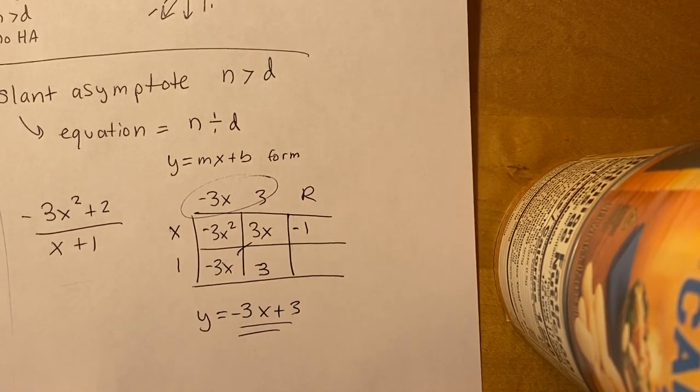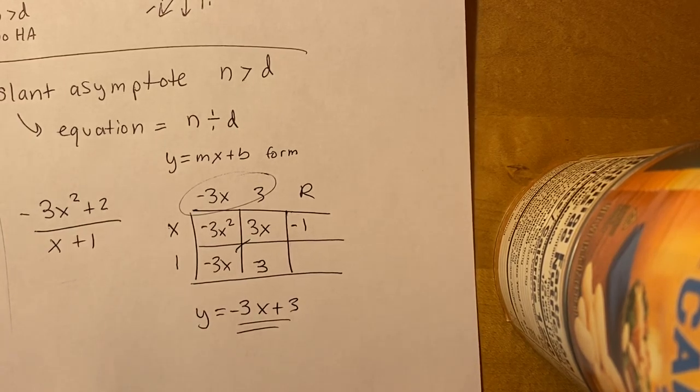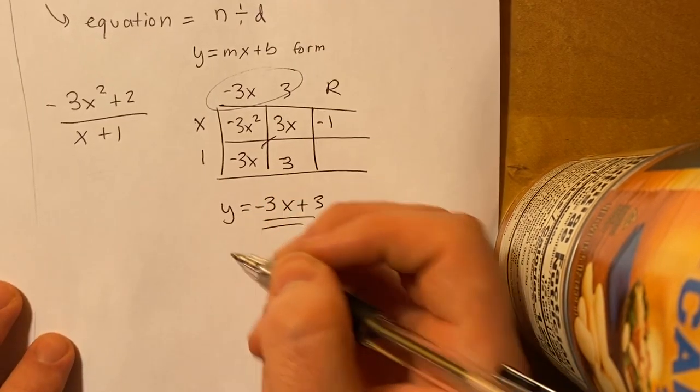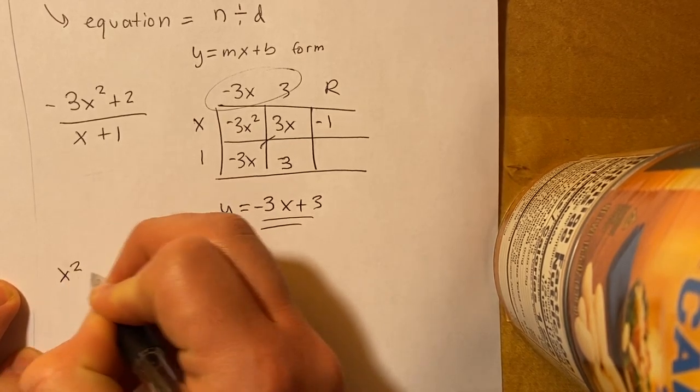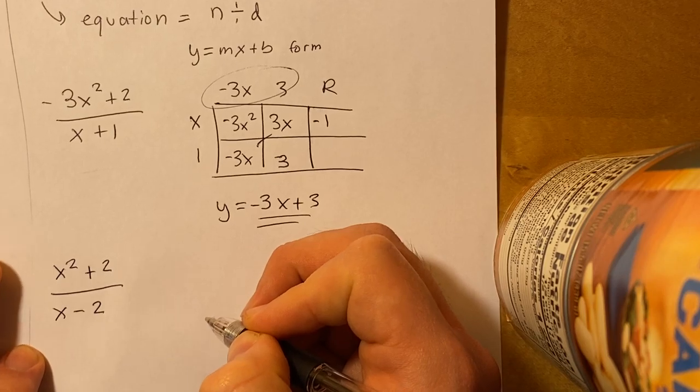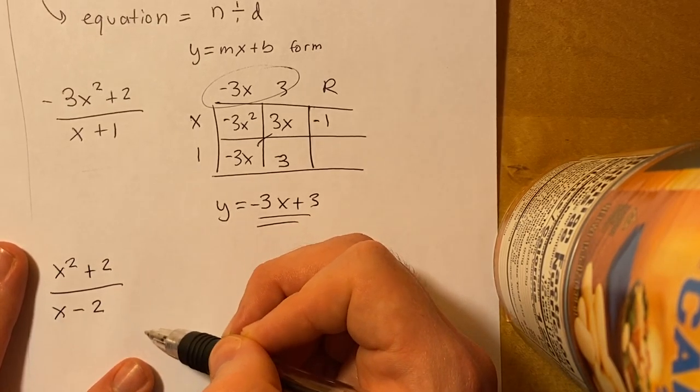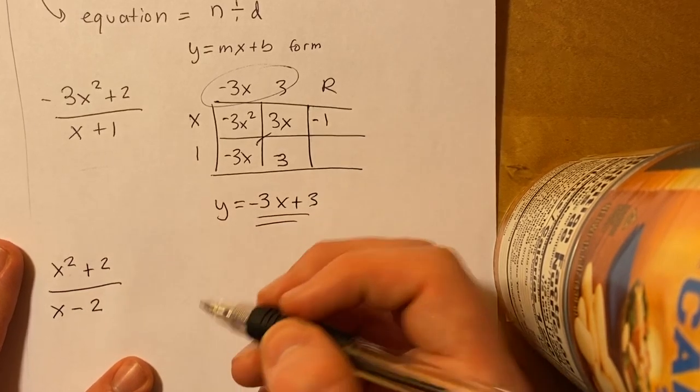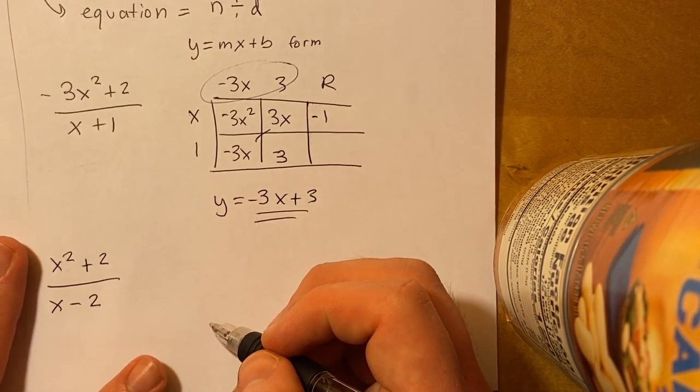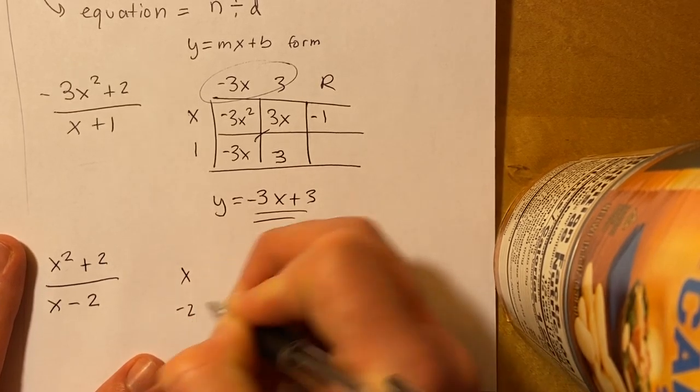And then we're going to do one more. Okay, so the next one is going to be x squared plus 2 over x minus 2. All right. So same thing. We definitely do have a slant asymptote because it's 1 greater than the other one. So let's do our boxed division again. So we'll do x minus 2.